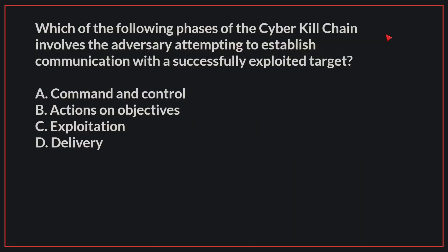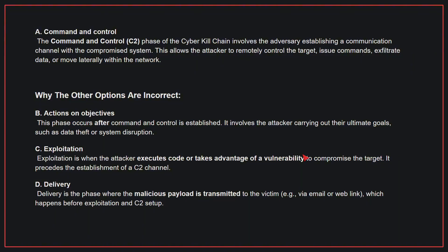Which of the following phases of the cyber kill chain involves the adversary attempting to establish communication with a successfully exploited target? The correct answer is A. Command and control. The command and control phase of the cyber kill chain involves the adversary establishing a communication channel with the compromised system. This allows the attacker to remotely control the target, issue commands, exfiltrate data, or move laterally within the network.